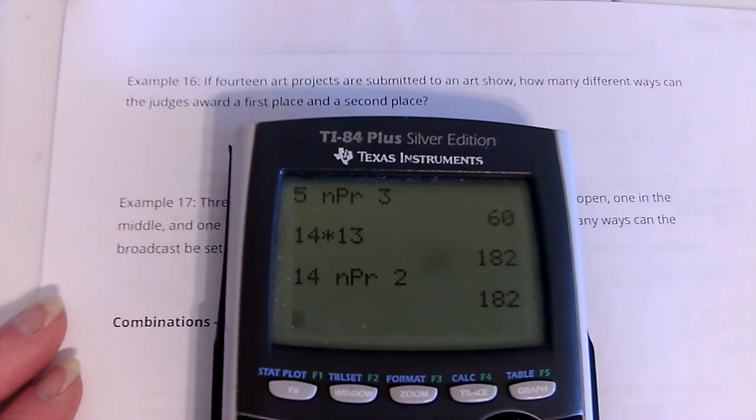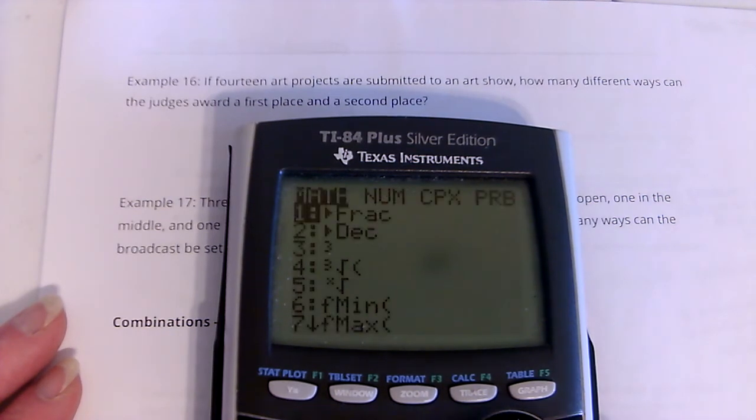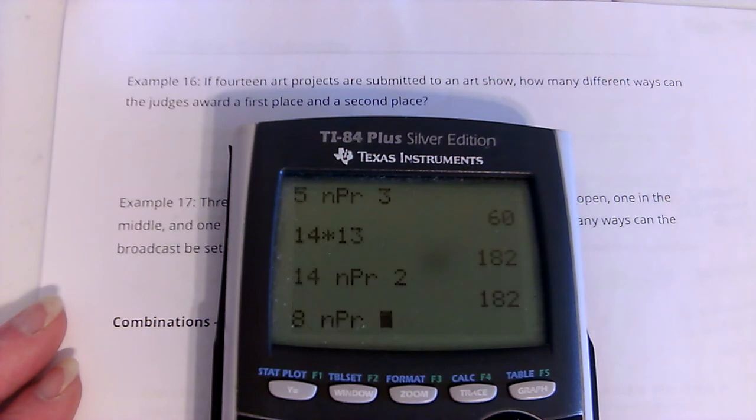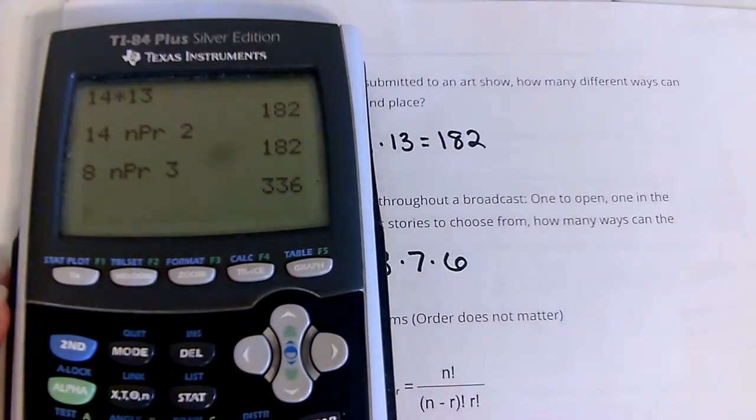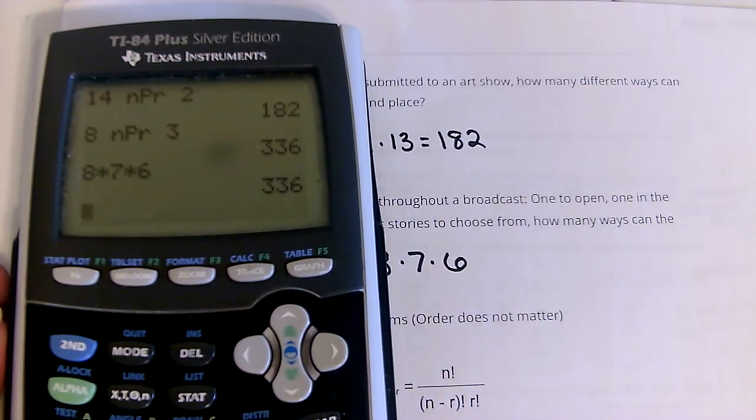8 pick 3. That's 336. Let's see, 8 times 7 times 6, 336.